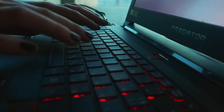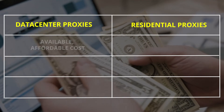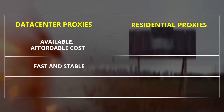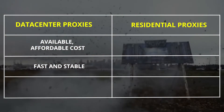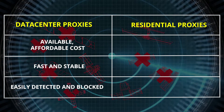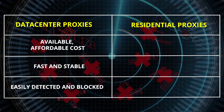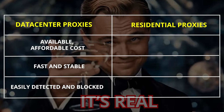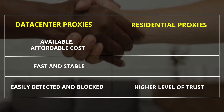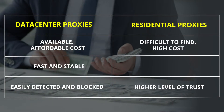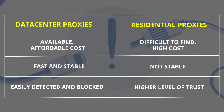To consider choosing the right residential and data center proxies, you should note the following points. Data center proxies are always available at affordable cost and use high performance servers, so the fast line speed is suitable for high speed access requirements. However, the IP of data center proxies is easily detected and blocked by high-tech websites. Residential proxies have the advantage of being tied to the real IP address of a residential area, so the trust level is much higher than that of data center proxies, but the cost will be high, they are difficult to find, and the connection speed is not stable.